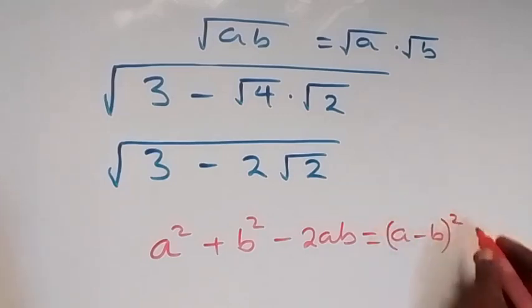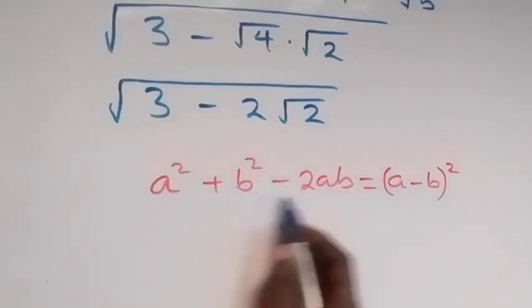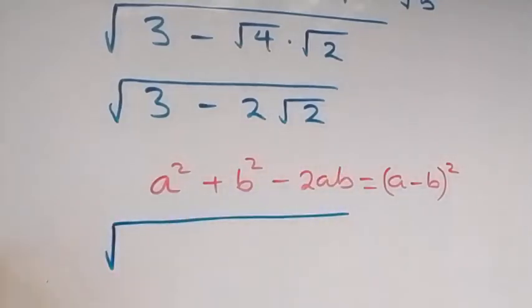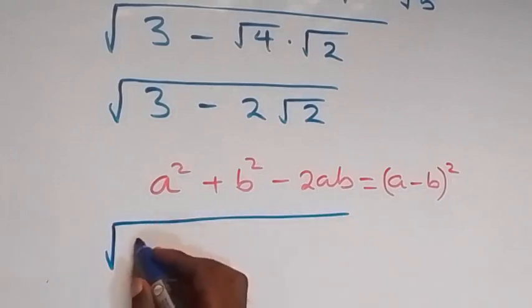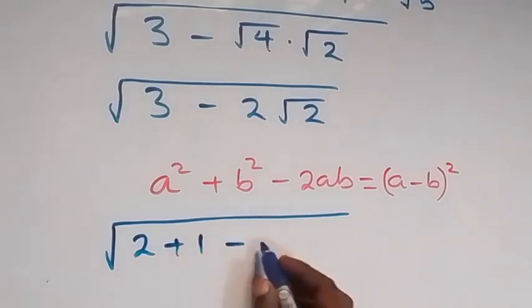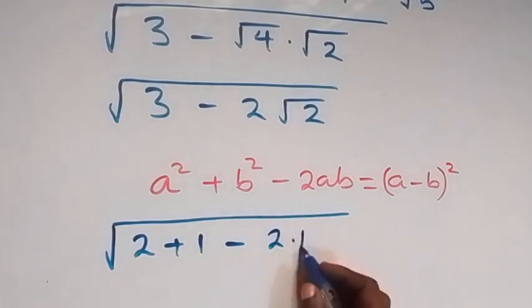Then from what we have here, let's rewrite this as what we have on the left. Then this becomes square root of, here we can write 3 as 2 plus 1, then minus here we can write this as 2 times root 2 times 1, then times root 1.